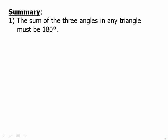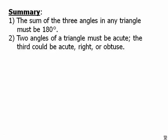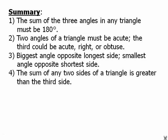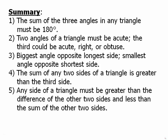In summary, the sum of three angles in any triangle must be 180 degrees. That's the really big one. True for all triangles. Two angles of a triangle must be acute. The third one could be acute, right, or obtuse. But it's true for any triangle that at least two of the angles are acute. Another property true for all triangles. The biggest angle is always opposite the largest side. And the smallest angle is always opposite the shortest side. True for all triangles. The sum of any two sides of a triangle is greater than the third side. True for all triangles. And another way to say that is any side of a triangle must be greater than the difference of the other two sides and less than the sum of the other two sides. Everything on this summary is true for every triangle on Earth.